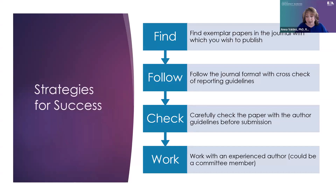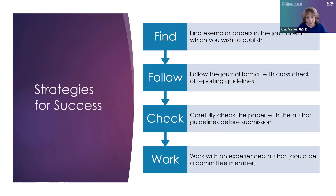A couple strategies for success: know the scope and aim of the journal; determine if it adds something new; know the journal's readers and tailor to their implications. If you're new or unsure about our interest, send an inquiry — even very experienced authors sometimes want to publish something we've recently published a lot on. Find exemplar papers; follow the format carefully; check the paper before submission. If you are new to writing for publication, consider working with an experienced author — a committee member who can help you. We require credit information listing what contributions every author made, so make sure all listed authors genuinely contributed to the writing.